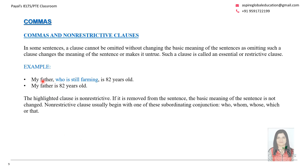Another example: 'My father, who is still farming, is 82 years old.' This can be broken into two sentences — 'My father is 82 years old' and 'My father is still farming' — combined into a complex sentence with commas. If the relative clause is removed, the basic meaning of the sentence is not changed, but it indicates that 'my father' is the common subject used with both phrases.